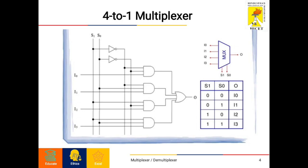Here on the left side of the page we can see the logic diagram of the multiplexer. For S1, the NOT gate connected gives S1 bar, and for S0, the NOT gate gives S0 bar. The output equation for I0 is S1 bar · S0 bar · I0. The second condition is S1 bar · S0 · I1. The third condition is S1 · S0 bar · I2, and the fourth is S1 · S0 · I3. All four AND gate outputs are joined together into an OR gate to form the final output.